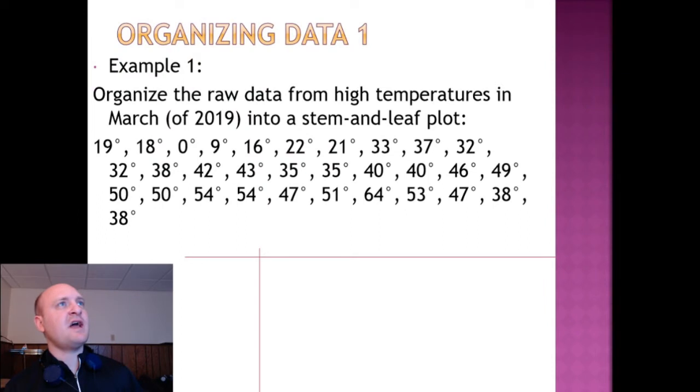Our first example is asking us to organize raw data from temperatures into a stem and leaf plot, and that means we're going to have to organize the stem and leaf plot. I notice that my lowest value in this table is 0, and my highest value appears to be 64. That means I need stems to match from the 0s to the 60s. Great, now that I have the stems filled in, I will have to place every leaf as each number. I'm going to do my best to leave the spacing so that the numbers can be listed from lowest to highest.